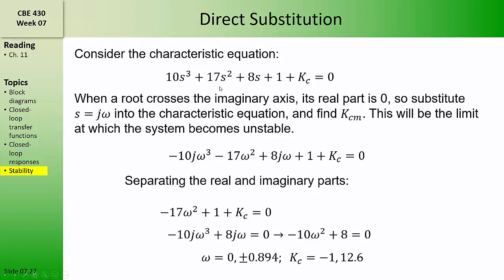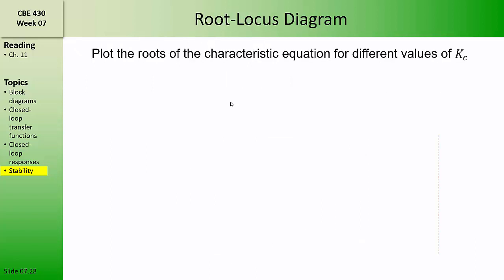To find out whether the process is stable for the region between minus 1 and 12.6, or whether that region represents the unstable region, we would have to select a value of Kc inside and outside of this range, and then find the roots to determine whether it's in the stable or the unstable region.